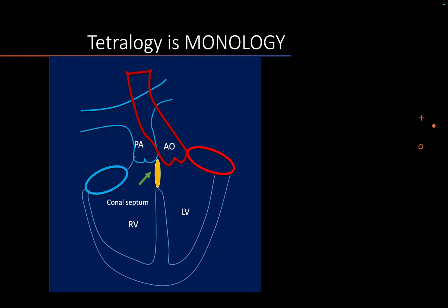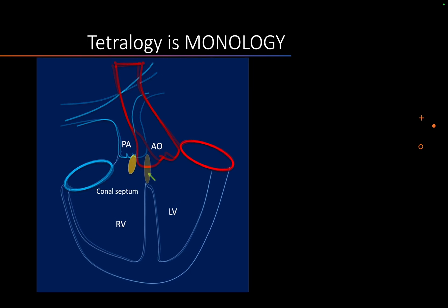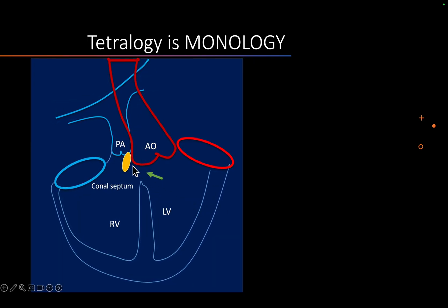I've made a small animation to make it more clear. It's not actually a tetralogy - it starts with a single component and that single component leads to four components. The conus septum divides the aorta and pulmonary artery. If the conus septum shifts towards the right side, it makes the pulmonary artery narrow, makes a VSD, makes the aorta override, and the right ventricle becomes hypertrophied because of the PS. Just by the shift of the conus, the physiology of tetralogy develops - it's monology, just a shift of the septum.